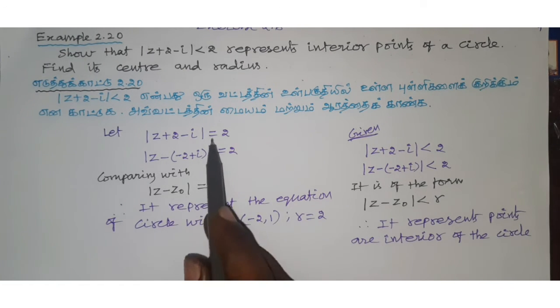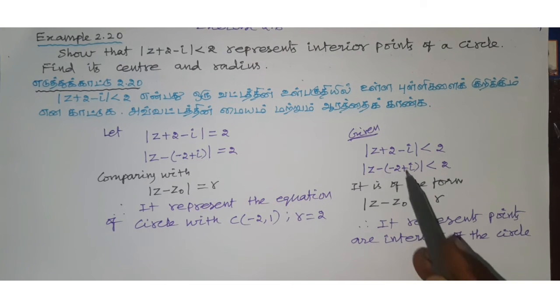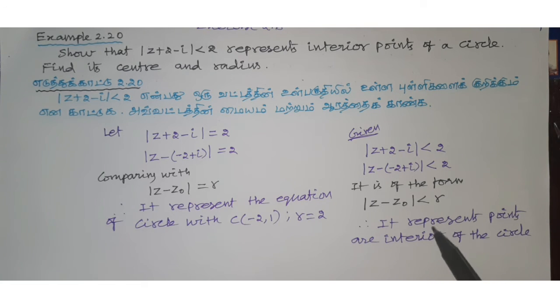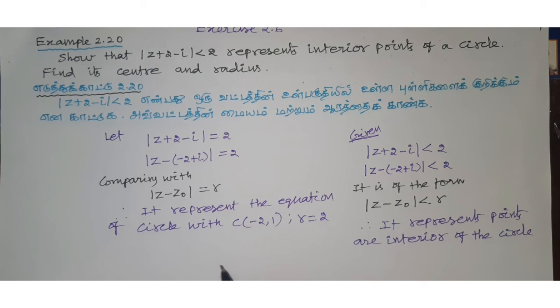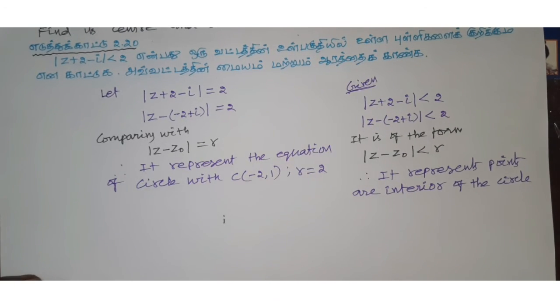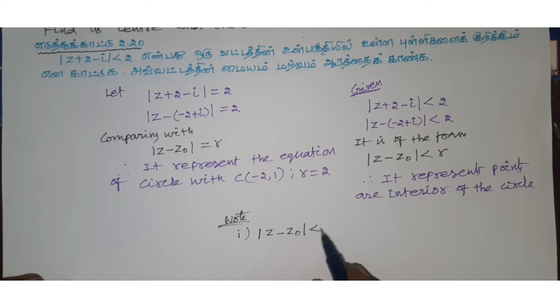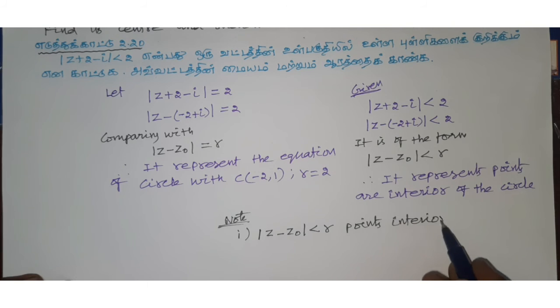So first the equation gives center and radius. Using the formula z minus z naught less than r, it represents interior points of the circle.